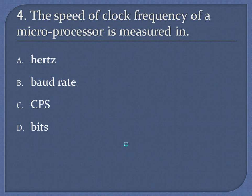Question 4: The speed of clock frequency of a microprocessor is measured in. A. Hertz. B. Baud rate. C. CPS. D. Bits. Answer: Hertz.